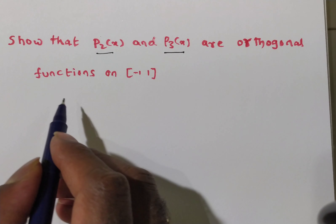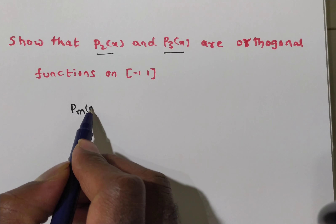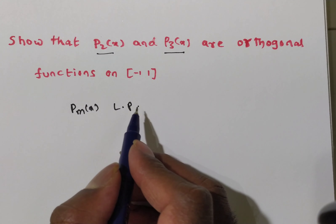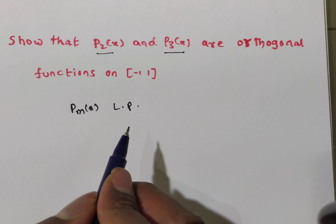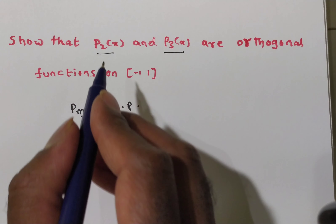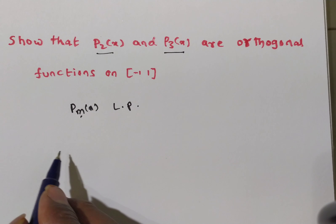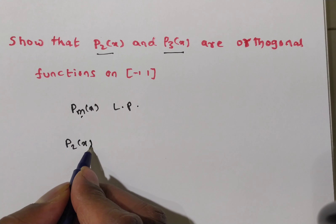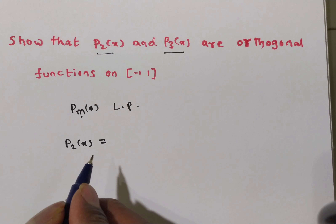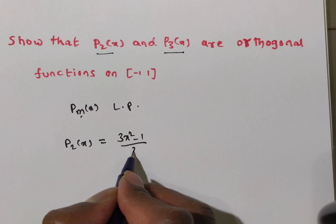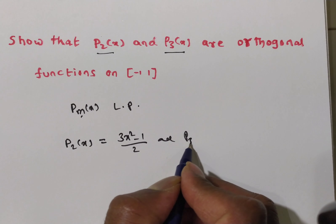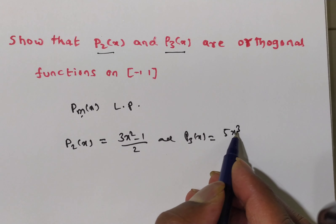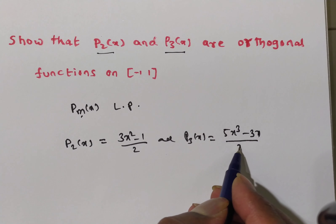What are these two functions actually? We know that Pm of X is a Legendre polynomial. If M is equal to 2, then we have P2 of X, and if M is equal to 3, we have P3 of X. From the Legendre polynomials, P2 of X is equal to (3X squared minus 1) divided by 2, and P3 of X is equal to (5X cubed minus 3X) divided by 2.